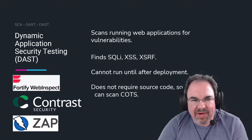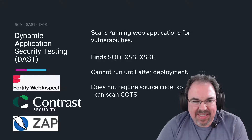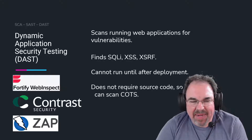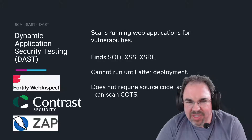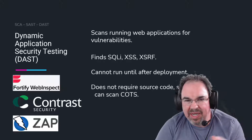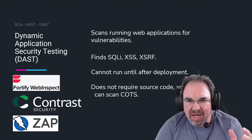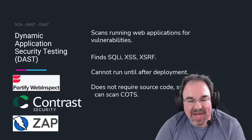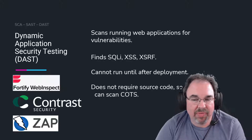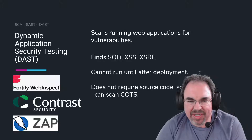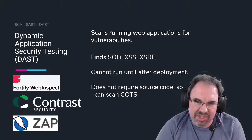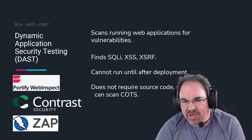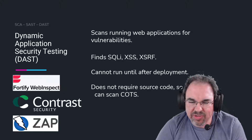The last acronym is DAST, Dynamic Application Security Testing. This is the other side of SAST — where SAST is looking at the source code, DAST is not. DAST is looking at a running application, and it will also find SQL injection, but also things like cross-site scripting or cross-site request forgeries.